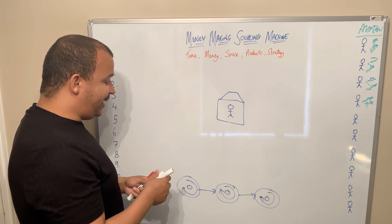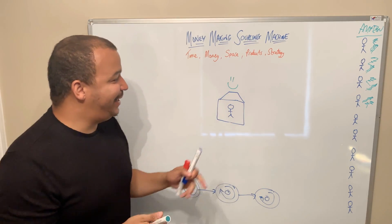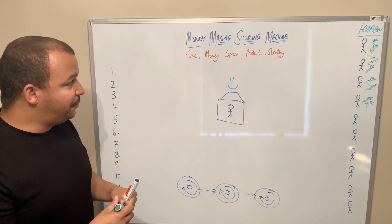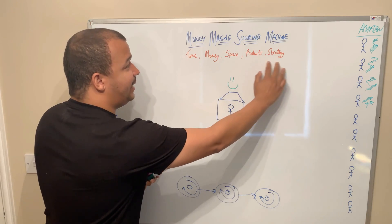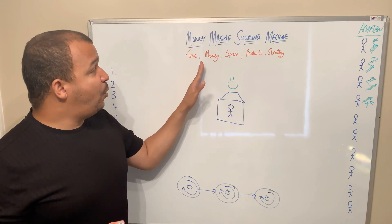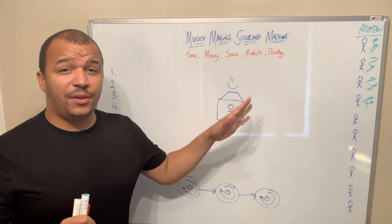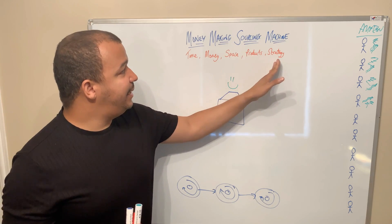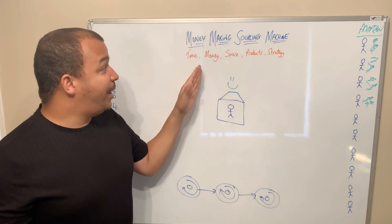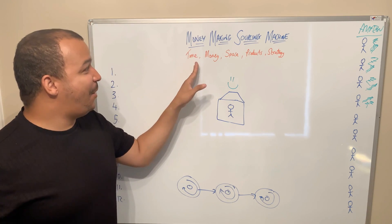What you want is a flow of products coming to you every single day. But let's start with the bottlenecks in your business. It doesn't matter what level you're at — whether you're just starting out, intermediate, or already have a business — one of these things is preventing you from growing to the next level. The first one is time. We haven't got enough time. It's a bottleneck.